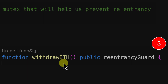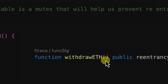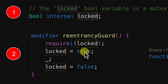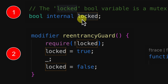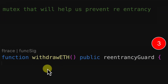We apply this `reentrancyGuard` modifier to any function we want to protect. It prevents the user from entering the same function again. When the user calls `withdrawETH` for the first time, the modifier runs first. The require statement passes because `locked` is initially false, then we change it to true and run the execution of `withdrawETH`.